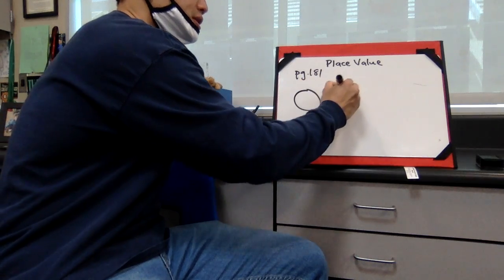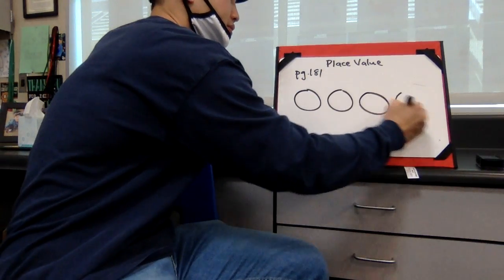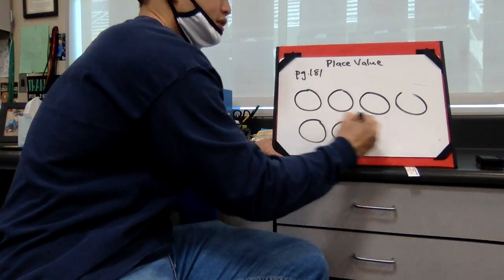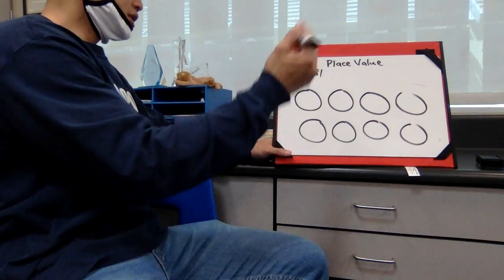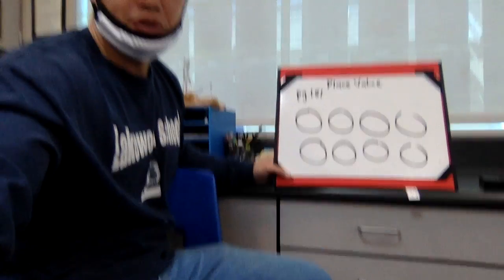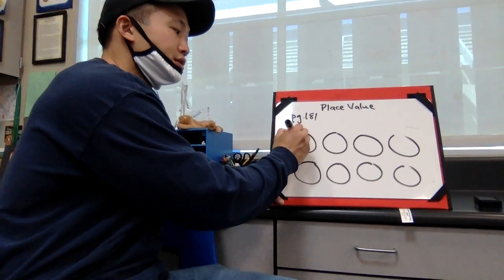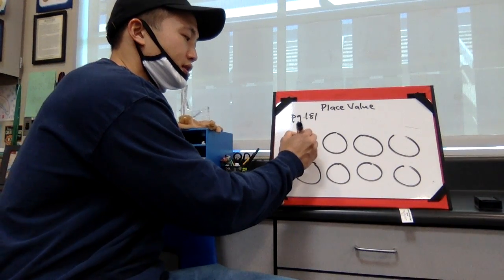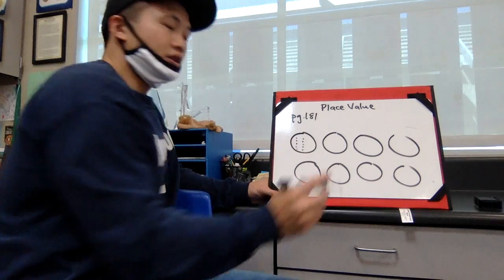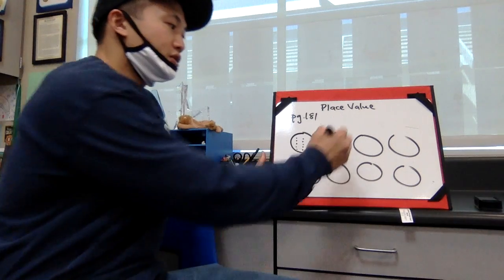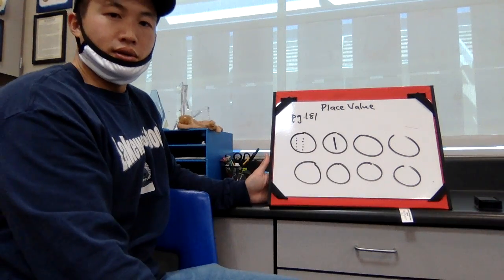So you can use a place value drawing, and it could look similar to this. You can do ten represented with ten ones. So if you wanted to draw ten ones like this, you're welcome to do that. If you just want to draw the single line, that works too.